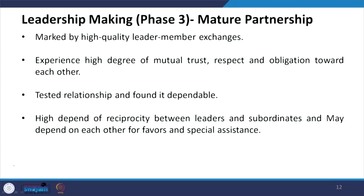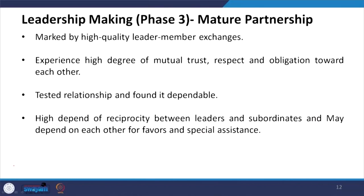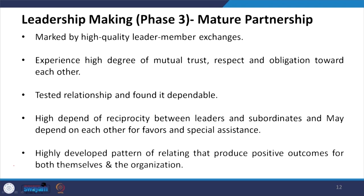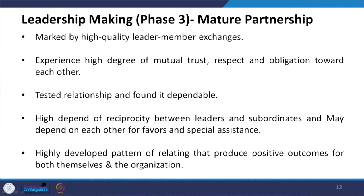When acquaintance moves towards mature partnership, it is marked by high quality leader member exchanges — communication, interaction, assignments, delegation all start. It will move towards maturing the partnership. There is a high degree of mutual trust, respect and obligation towards each other, becoming very important for a mature partnership. Trusted relationship and found dependable — both understand each other and are ready to make the leader member relationship. High dependence of reciprocity produces positive outcomes for both themselves and the organization, and they may depend on each other for favors and special assistance.